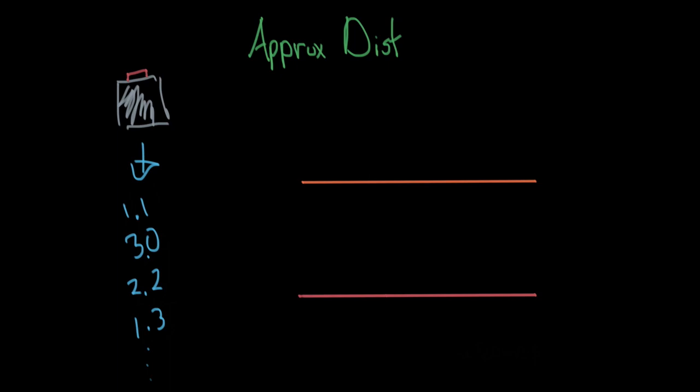As we said before, we can view the distribution of this data using a tool called a histogram. You put the 1.1 here, put the three, I guess, smack down in the middle. Let's make this from zero to five. We'd put the 2.2 here, put the 1.3 on top.